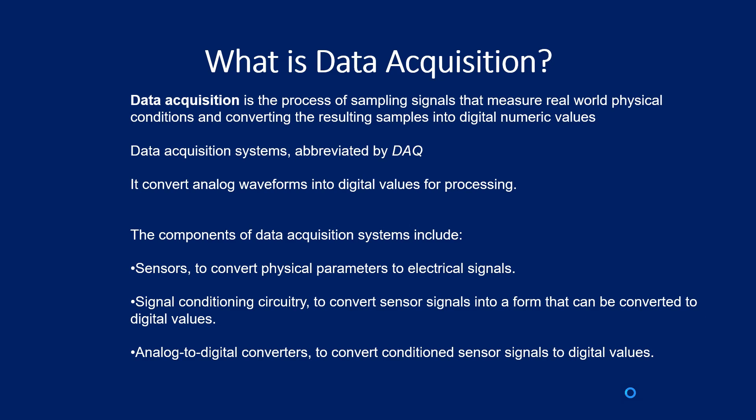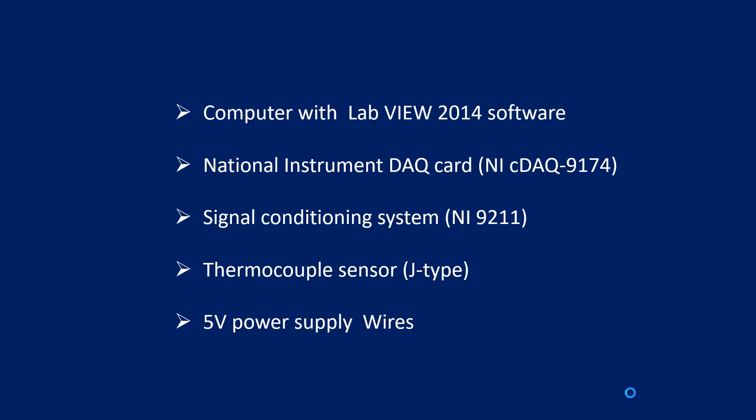The components of a data acquisition system include sensors. The output coming from the sensor is called data. Sensors are used to convert physical parameters to electrical signals. Signal conditioning circuitry is also required because the output from the sensor is not sufficient to process directly. It may be an amplifier or a filter. These are called signal conditioning or signal processing circuits, used to convert the sensor signal into a form that can be converted to digital values. Analog to digital converters are required to convert the conditioned sensor signal to digital values.